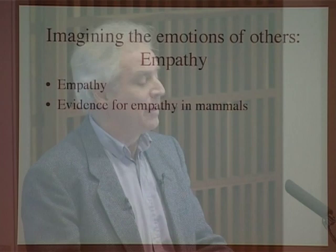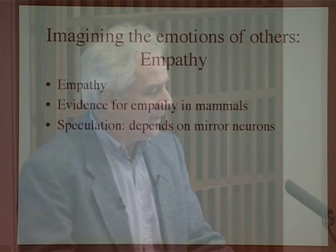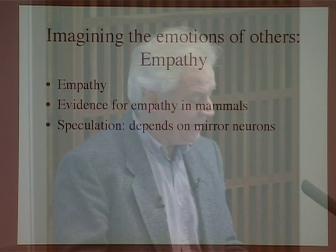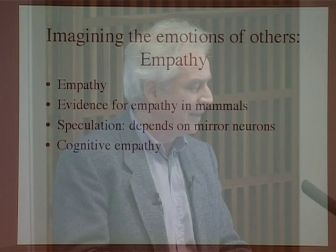There are speculations among scientists that this depends on mirror neurons. The real role of mirror neurons is not to imitate the behavior of others, but to understand the emotions of others — that's the primary role. I'm not sure I can evaluate this claim.